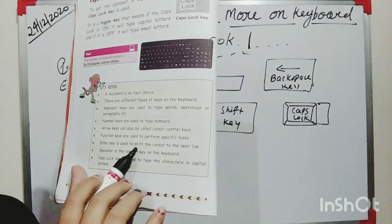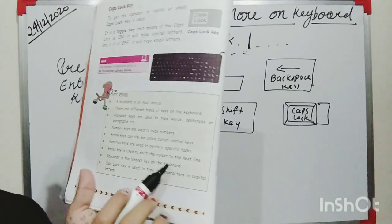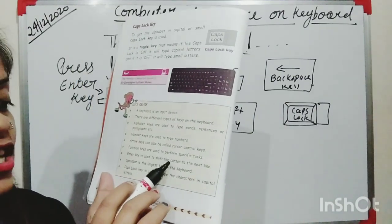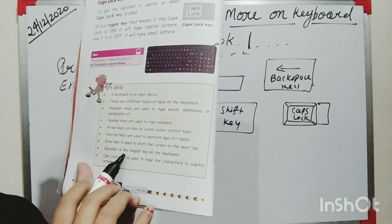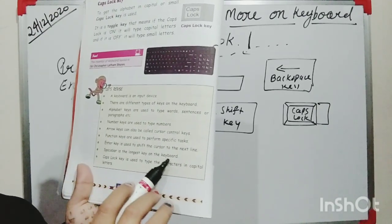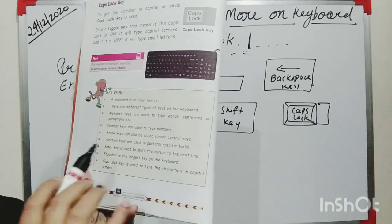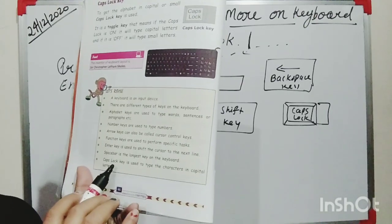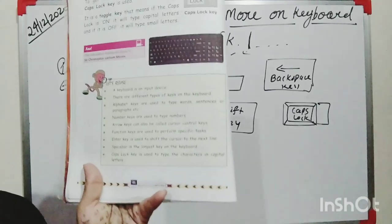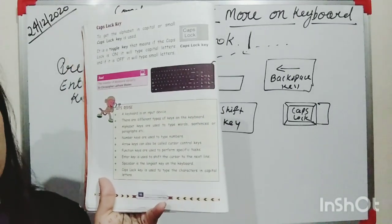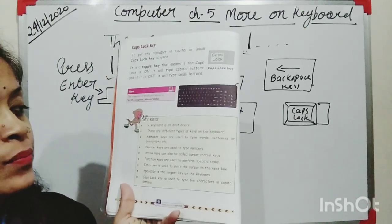Enter key is used to shift the cursor to the next line. Space bar is the longest key on the keyboard. Caps Lock key is used to type characters in capital letters. I hope you understand this chapter — chapter five is now over.